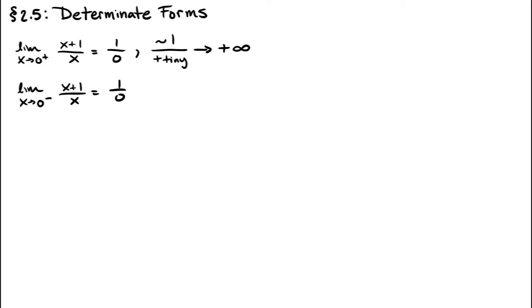What about when we take the limit from the left? Substitution still gives us 1 divided by 0, but now we see that for any specific x that's just a little bit to the left of 0, this is something roughly 1 divided by a tiny negative thing. As that tiny negative thing gets closer and closer to 0, this fraction is going to minus infinity. And so when we put this together, we see that the two-sided limit, which also has the form 1 over 0, does not exist.